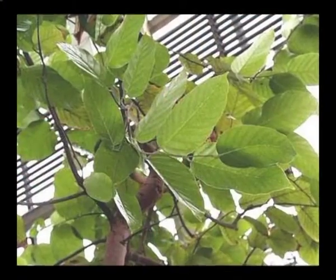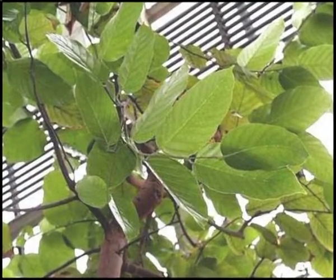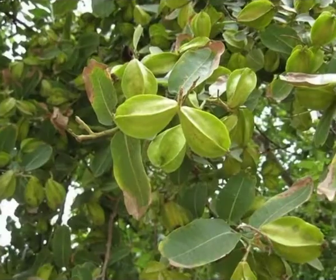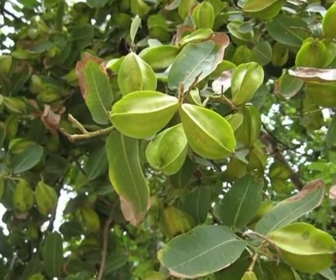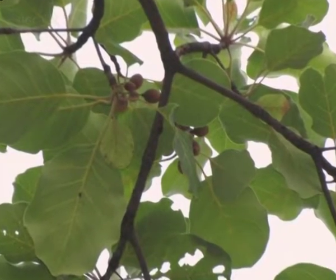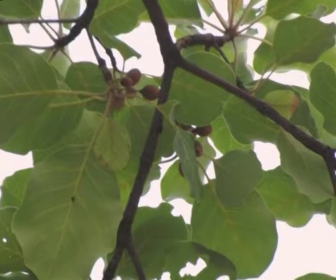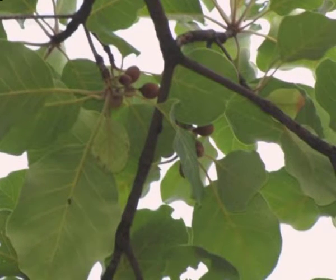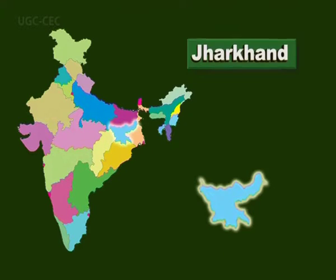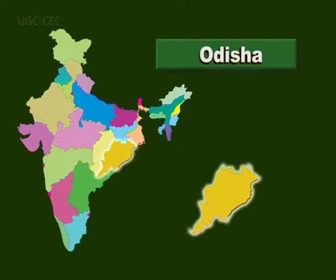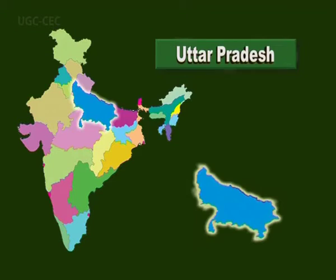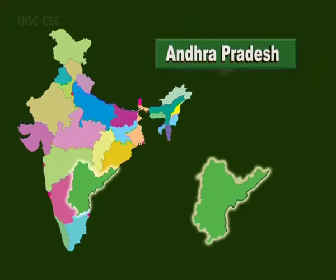The sericigenous insect feeds primarily on Shorea robusta (sal), Terminalia arjuna, and Terminalia tomentosa. Besides these, varieties of secondary and tertiary food plants are available in tropical deciduous forests of West Bengal, Jharkhand, Bihar, Orissa, Chhattisgarh, Madhya Pradesh, Uttar Pradesh, Maharashtra, and Andhra.